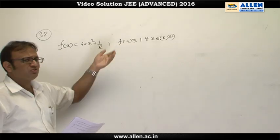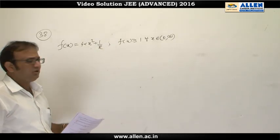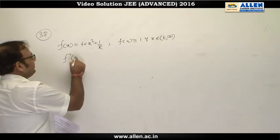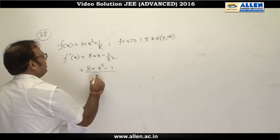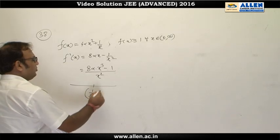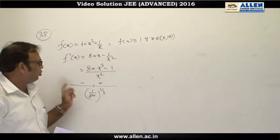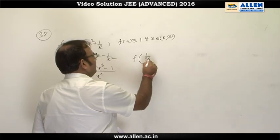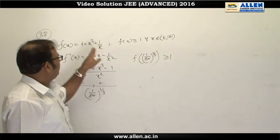We want the range of f(x) to start from 1 or above, meaning its minimum value is at least 1. We differentiate: f'(x) = 8αx − 1/x². To the right of 0, the derivative is zero only at x = (1/8α)^(1/3). The derivative is negative before this point and positive after, so the minimum of f on (0, ∞) is attained here.